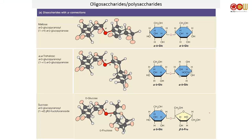When the sugar closes and forms a ring, the carbonyl oxygen will go from a carbonyl to a hydroxyl group. And as you form the hydroxyl group, you can always have two anomers.